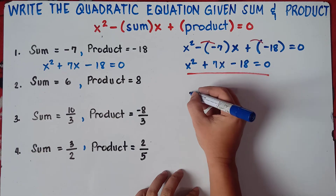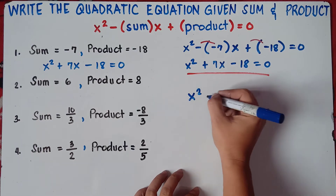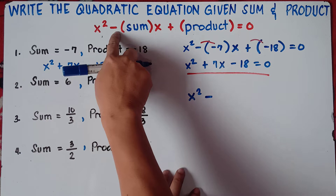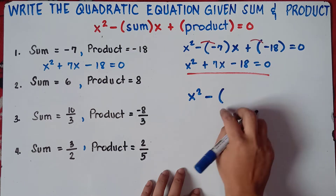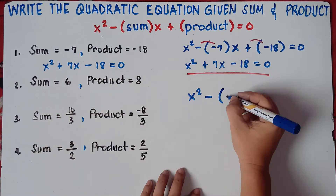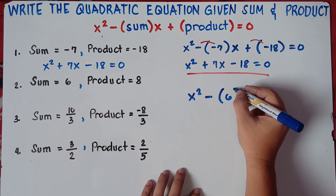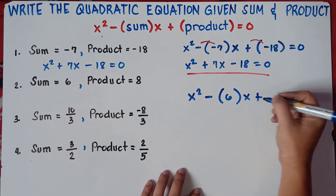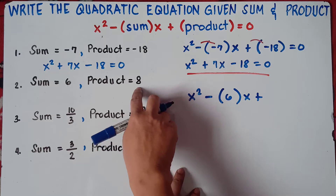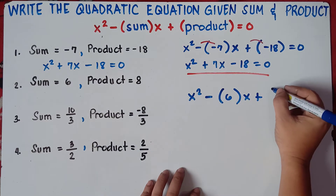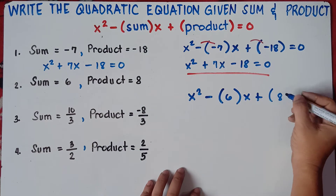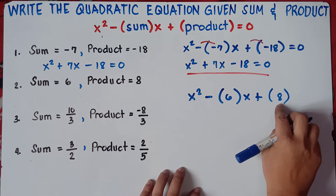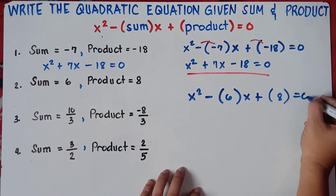Alright, so let's try number 2. We have x squared minus the equation. Once again, x squared minus the sum is positive 6. So 6, close parenthesis times x plus the product is positive 8. Open parenthesis 8, then close parenthesis equals 0.